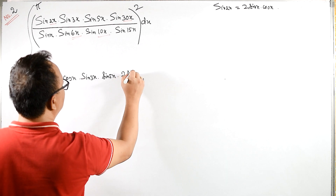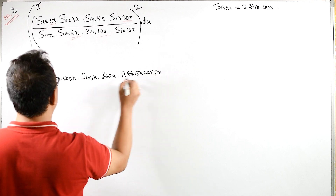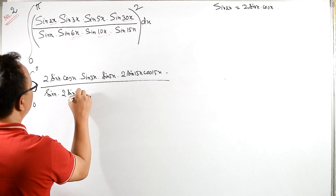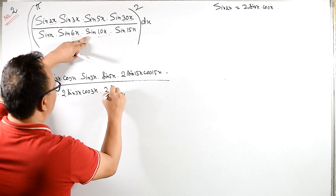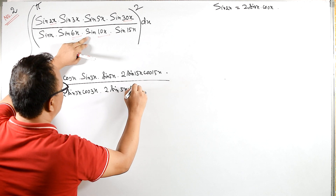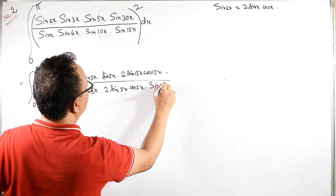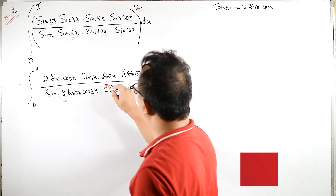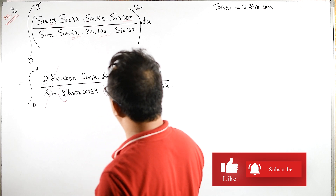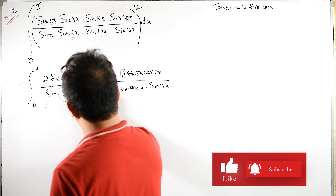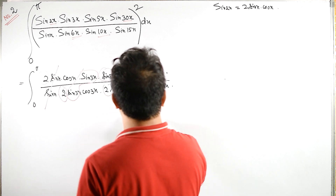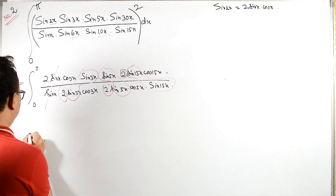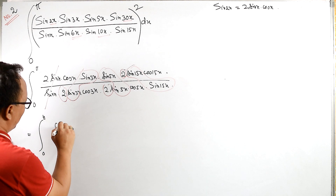Sine 15x becomes 2 sine 15x cos 15x, sine 3x becomes 2 sine 3x cos 3x, and sine 5x becomes 2 sine 5x cos 5x. Now 2 times 2 gives 4, and sine x cancels with sine x, sine 3x cancels with sine 3x, sine 5x cancels with sine 5x, and sine 15x cancels with sine 15x. So what we have is the integral from 0 to π of cos x...